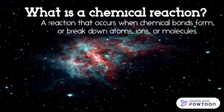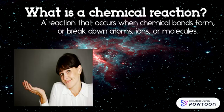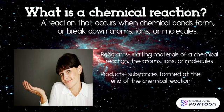What is a chemical reaction? It is a reaction that occurs when two chemical bonds form or break down atoms, ions, or molecules. They consist of two things: a reactant, which is a starting material, and the products, which is the substance that is formed after the chemical reaction.